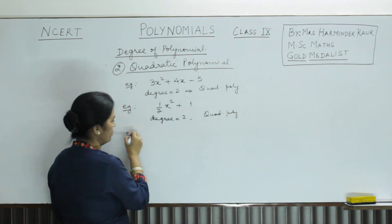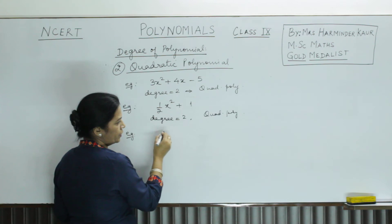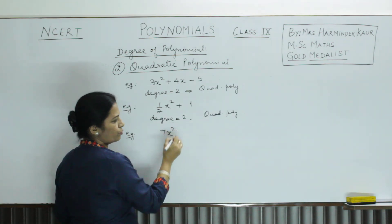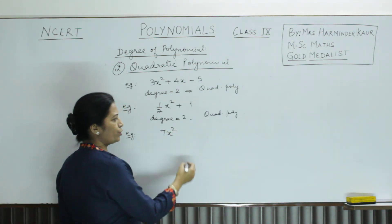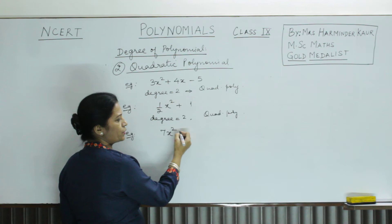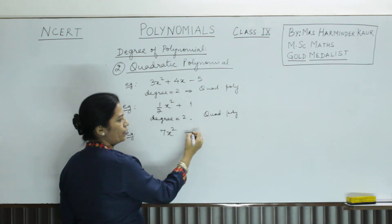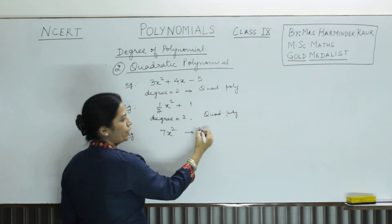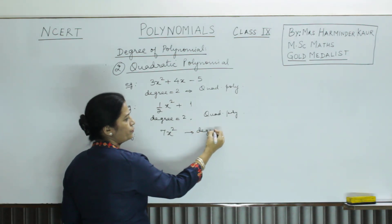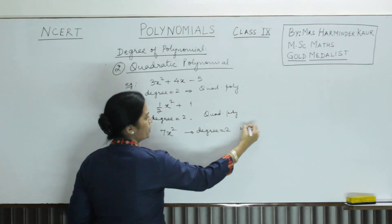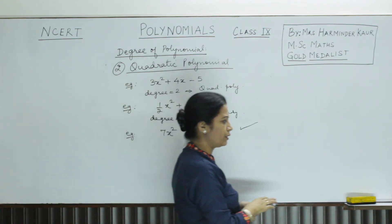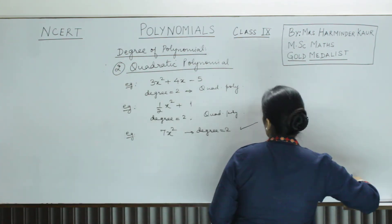Another example: 7x squared — will it be a quadratic polynomial? The highest power is 2, so degree is 2, and it is a quadratic polynomial.